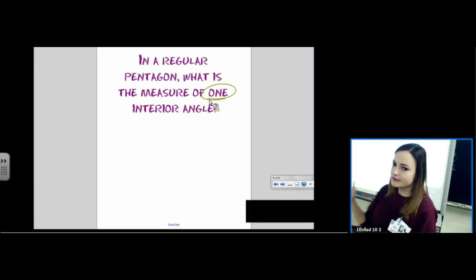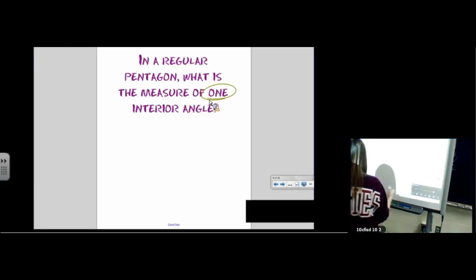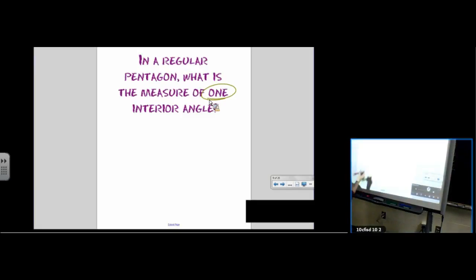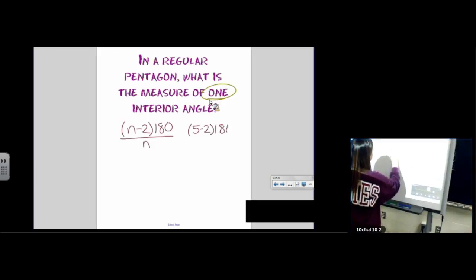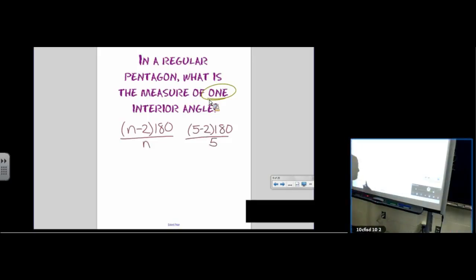Some of you may have been like, oh that's easy, we memorized it, it was on our sheet, it's one of the easier ones. Some of you, if you don't remember it, we can just use our formula. It was number of sides minus 2 times 180, the total number of degrees inside a polygon, divided by the number of sides. So a pentagon has 5 sides. 5 minus 2 times 180, divided by 5. We know a pentagon has 540 degrees on the inside, that's the sum of all interior angles. 540 divided by 5 will give us 108 degrees. That's the measure of one interior angle.